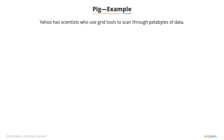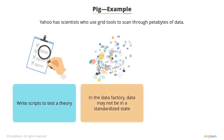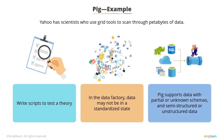Yahoo scientists use grid tools to scan through petabytes of data. Many of them write scripts to test a theory or gain deeper insights. However, in the data factory, data may not be in a standardized state. This makes PIG a good option, as it supports data with partial or unknown schemas and semi or unstructured data.